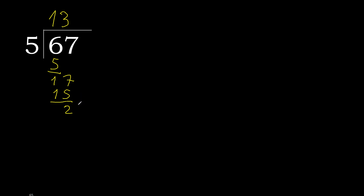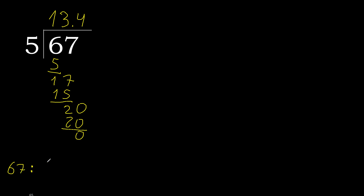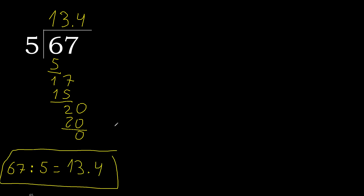Next. There is no number, therefore complete — always complete with 0, here with a point. 0 point. 20. 5 multiplied by 4 is 20. 20 minus 20 is 0. Therefore finish it. 67 divided by 5 is 13.4.